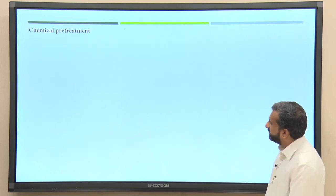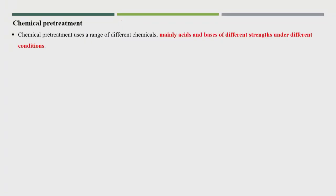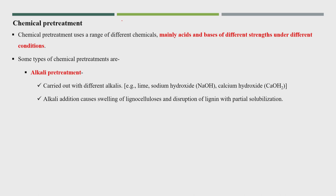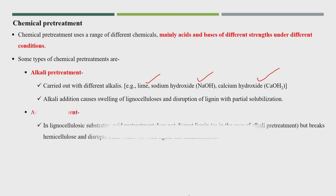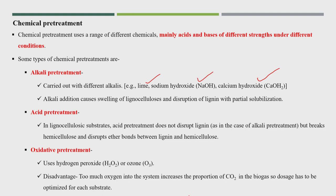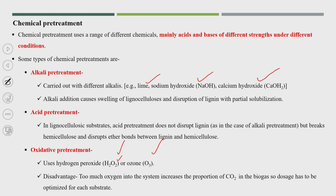Next is chemical pre-treatment, which uses a range of chemicals — mainly acids and bases of different strengths. Types include alkali pre-treatment using lime, NaOH, or calcium hydroxide; acid pre-treatment using various acids; and oxidative pre-treatment using hydrogen peroxide or ozone. However, the disadvantage of oxidative pre-treatment is that it adds too much oxygen to the system, which is not advantageous for an anaerobic process.